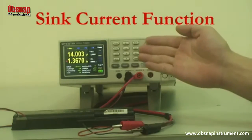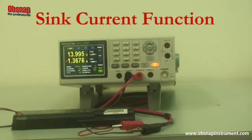Now, the screen shows a negative current measurement. That means PPH1503 is bleeding the battery. This concludes the demonstration of the Sink Current Function.